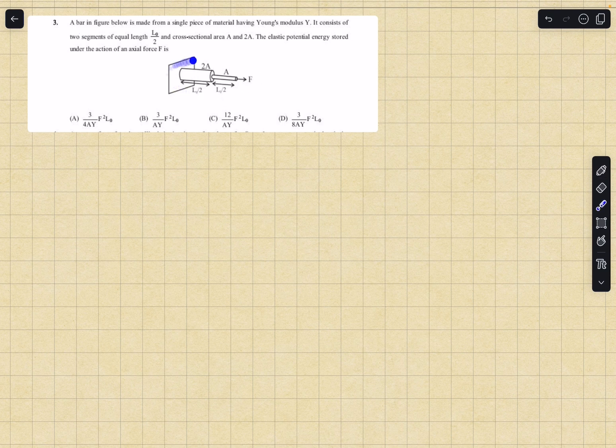In this question we have a bar as shown below, a single piece of material having Young's modulus Y. It consists of two segments of equal lengths L0 by 2 and area in the ratio of 1 is to 2. We have to find the elastic potential energy stored under the action of the axial force F.